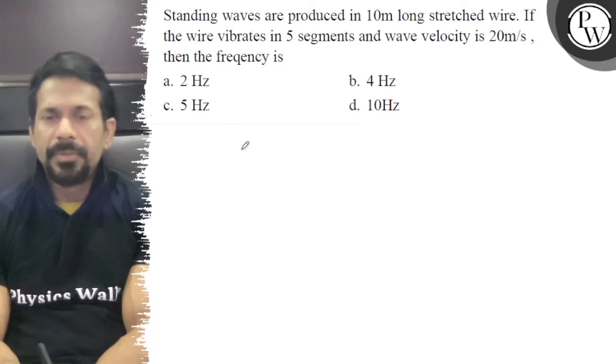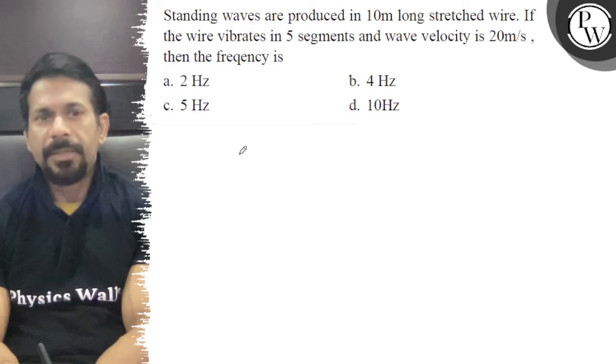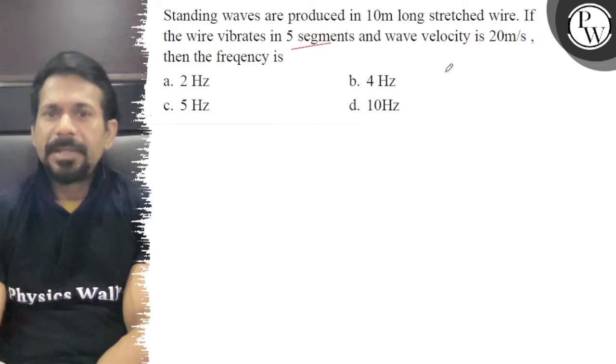Hello, let's see the question. Standing waves are produced in a 10-meter long stretched wire. If the wire vibrates in five segments and wave velocity is 20 meters per second, then what is the frequency? They give five segments.